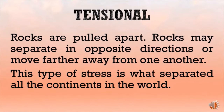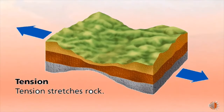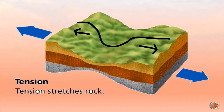The next is tensional stress, where rocks are pulled apart and may separate in opposite directions or move further away from one another. It is speculated that this type of stress is what separated all the continents during the breaking of the supercontinent known as Pangea. In the diagram, the tension is at the center, which is why the rock was pulled apart.